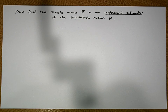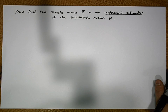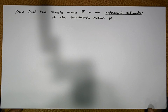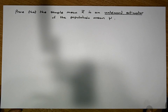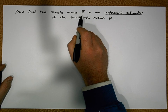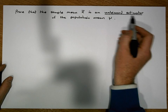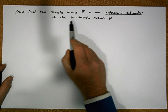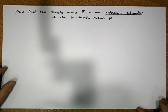Hi guys, this is Jonathan Lambert with the Mathematics Development and Support Service at the National College of Ireland. This short video will deal with a straightforward proof that the sample mean x-bar is an unbiased estimator of the population mean mu.